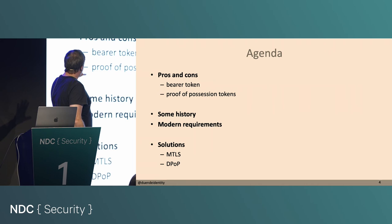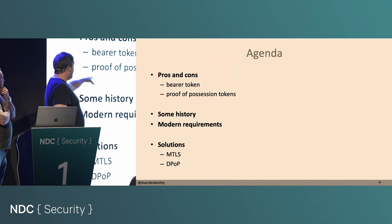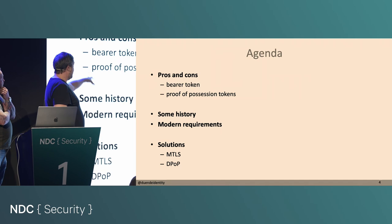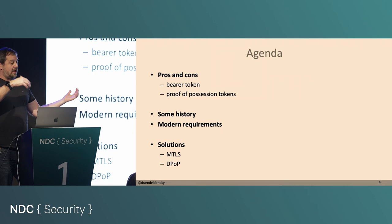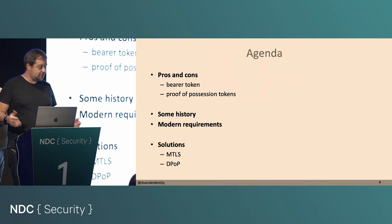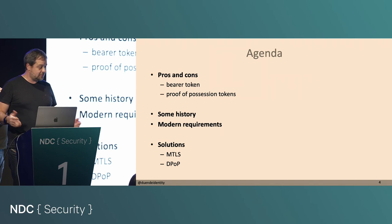Just a quick agenda so you can still leave the room if you think it's boring. We want to quickly talk about the status quo — which is bearer tokens in OAuth, what they're missing, and what proof of possession tokens are in contrast. We'll give some history, reasons why stuff is happening now, and then talk about the two technologies you could use today to implement this feature.